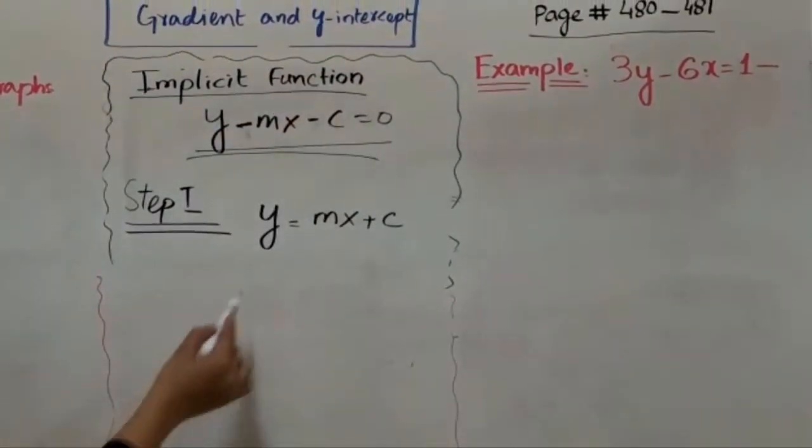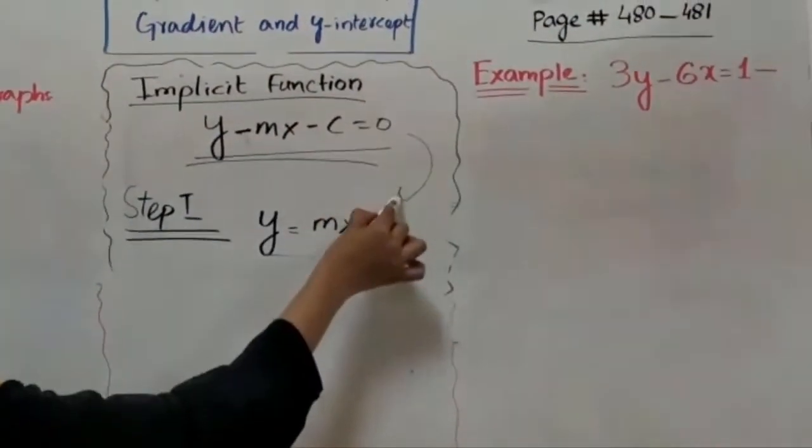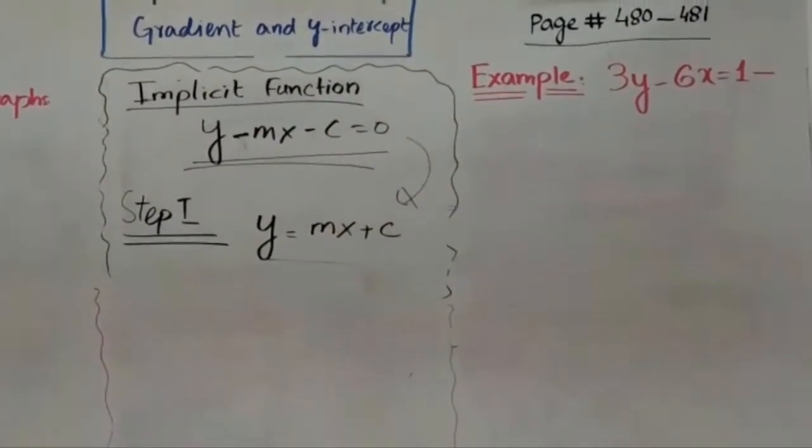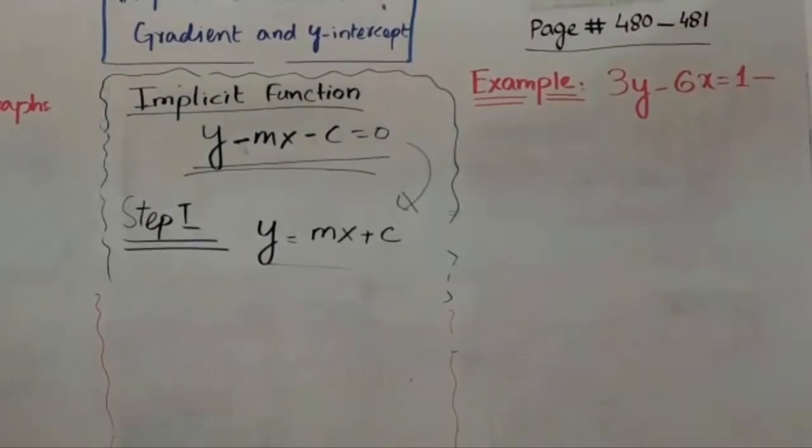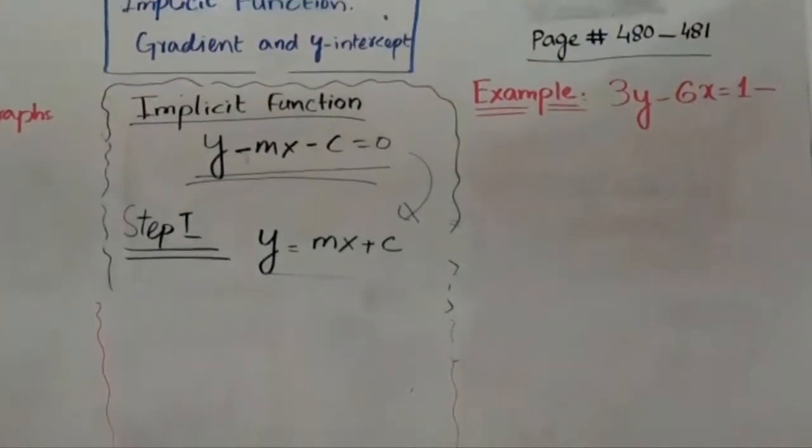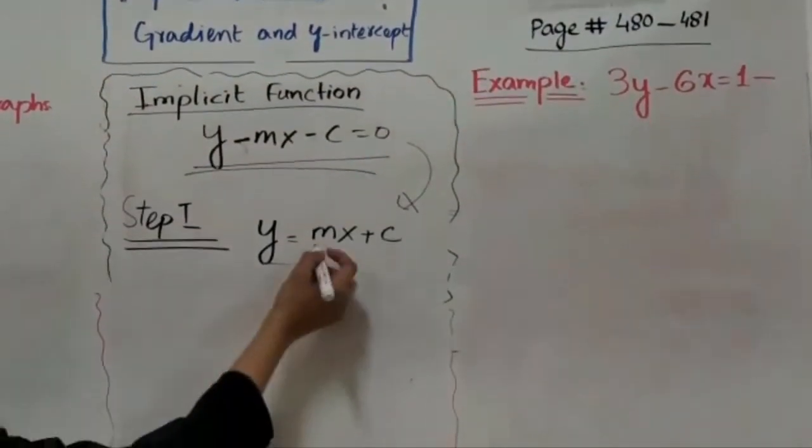So we have an equation like this. We are going to transform from implicit to explicit. Now for this equation you already know: